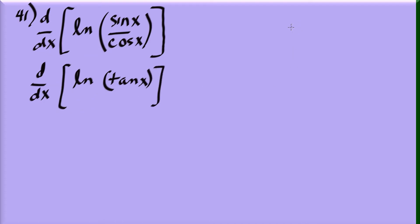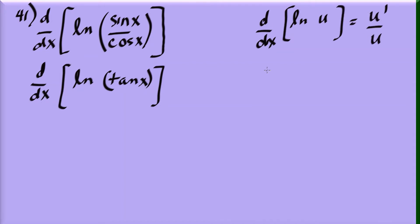To differentiate natural log of u, it's u prime over u. In this case our u is tangent x, and the derivative of tangent x is secant squared x. So the derivative is secant squared x over tangent x.